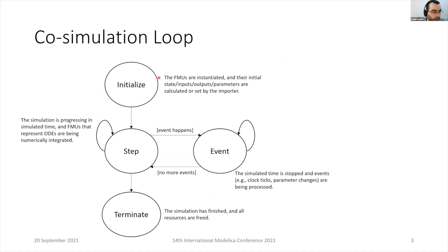A typical co-simulation loop or model exchange simulation loop has these four main phases. You have some initialization phase,